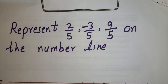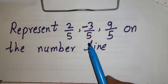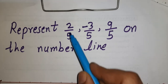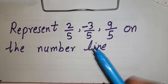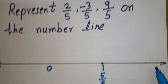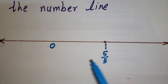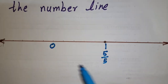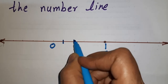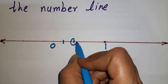Let us represent rational numbers on a number line. The question is: represent 2 by 5, minus 3 by 5, and 9 by 5 on a number line. Now, 2 by 5 is going to lie between 0 and 1, because 1 is the same as 5 upon 5. So each part is 1 by 5, and 2 by 5 can be marked accordingly on the number line.